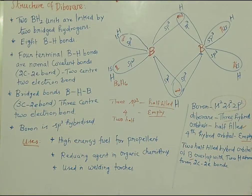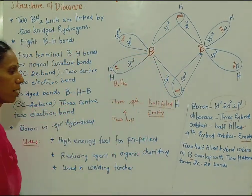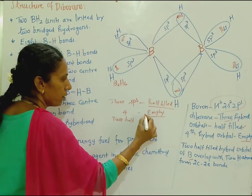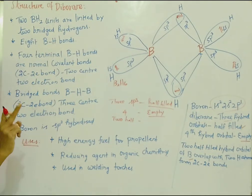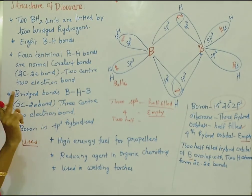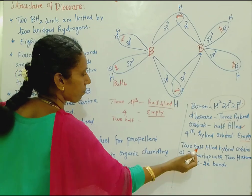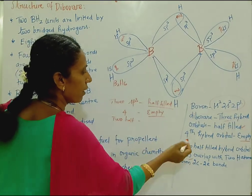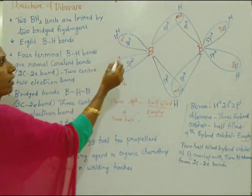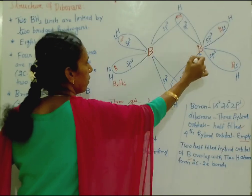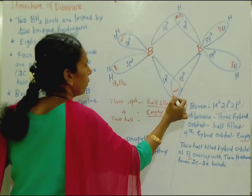So this is how the BHB bridging bond is formed. The 3rd sp3 hybrid orbital of boron overlaps, and the 4th sp3 hybrid orbital of boron is empty. This empty orbital overlaps with the half-filled 1s orbital of hydrogen to form the BHB 3-center, 2-electron bond.